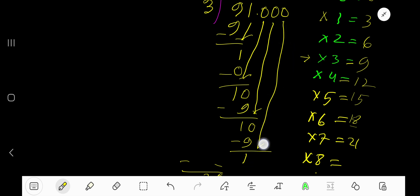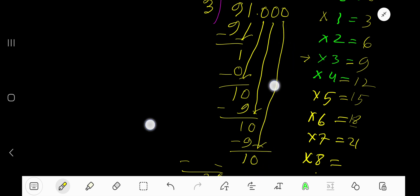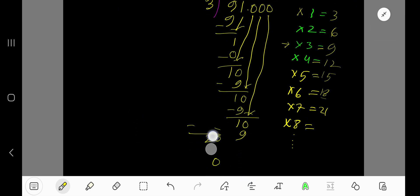Bring down the next 0. 3 goes into 10 how many times? 3 times. 3 times 3 is 9. Subtract 1.